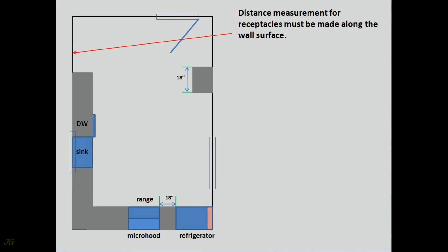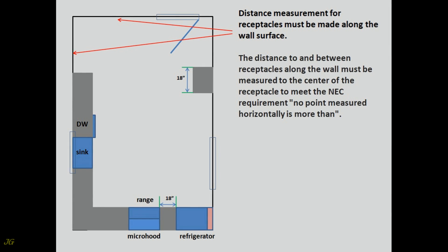Distance measurement for receptacles must be made along the wall surface. The distance to and between receptacles along the wall must be measured to the center of the receptacle to meet the NEC requirement, such that no point measured horizontally is more than the specified distance from a receptacle.